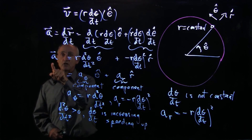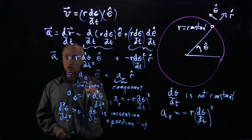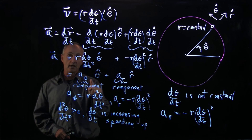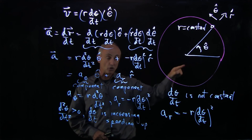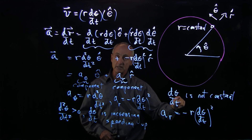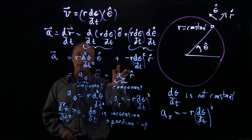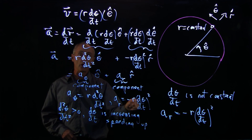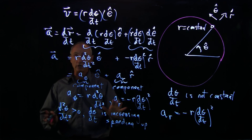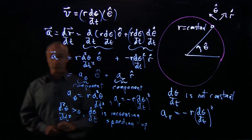So again, the acceleration has two components: a tangential component, which depends on whether d theta dt is constant or not, and it always has a non-zero inward radial component given by minus r d theta dt squared, regardless of whether it's speeding up or slowing down.